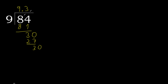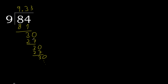We have 30 again. 9 multiplied by 3 is 27. Subtract: 30 minus 27 equals 3. Complete — the remainder is 3 again, therefore this repeats. The digit 3 will keep repeating.